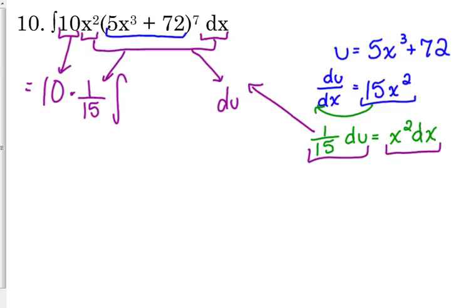So, x squared dx gets replaced. I'm just putting them in separate places, because the 1 over 15 is a constant, so I'm going to put it in front. Now, the du always goes on the end.